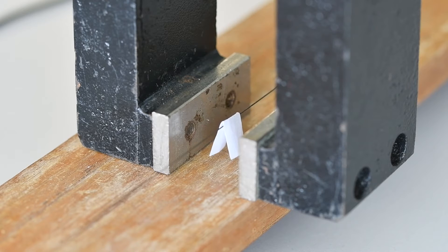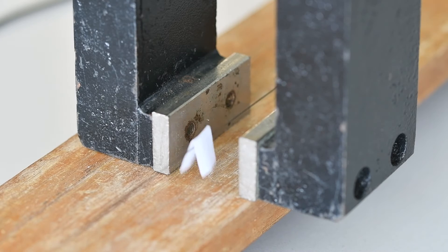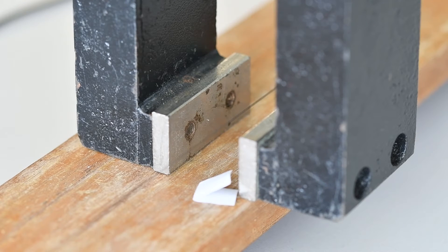Now I'm going to slowly increase the frequency on the signal generator. And you can see that the string is beginning to vibrate. I'm increasing in steps of 0.1 hertz. So our maximum vibration was at 125.7 hertz.